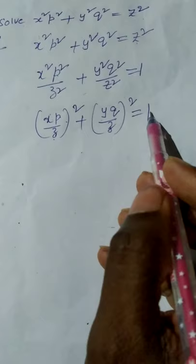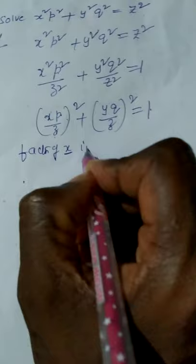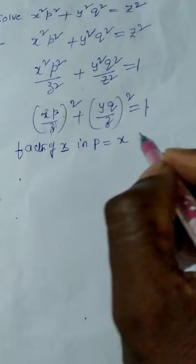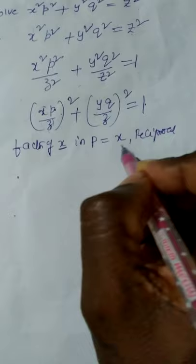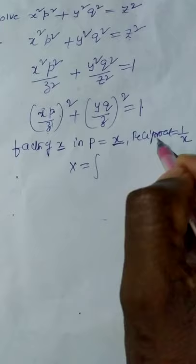To merge small x into small p, we take capital X. The factor of x in the quotient of p is x — the quotient of p is x/z. Since the factor is x, its reciprocal is 1/x. So we take capital X = ∫(1/x)dx = log x.